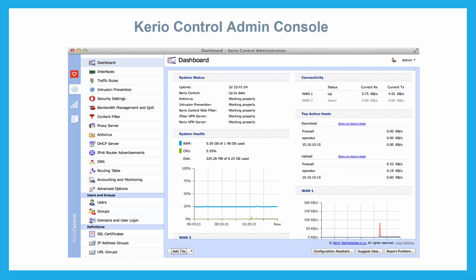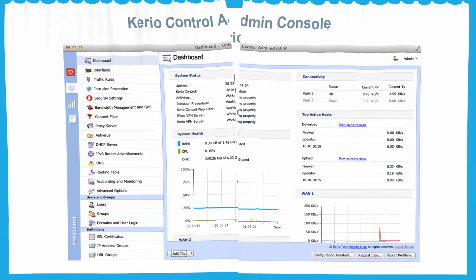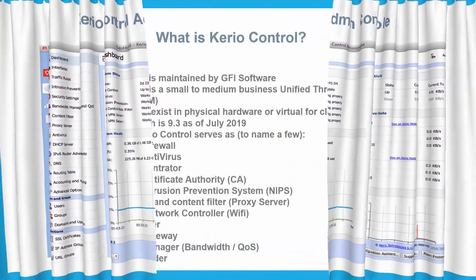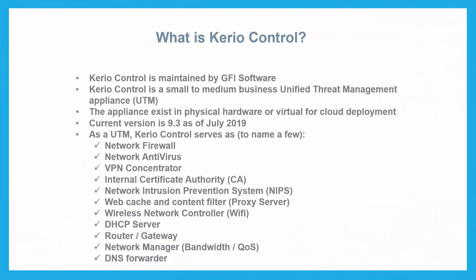The dashboard looks like this. Some of the features that Carrier Control provides include network firewall, antivirus, VPN concentrator — it can be a router, gateway, DHCP server, DNS forwarder — and the list is endless.